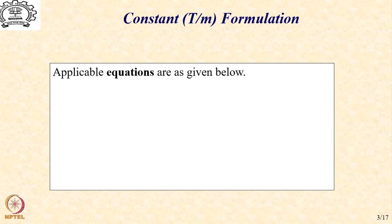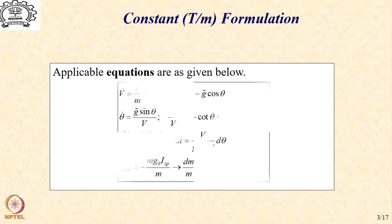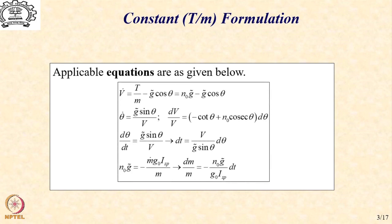Let us now look at the applicable equations. When we take the v-dot equation, we have the thrust term m-dot times g0 times Isp by m, but that is effectively the T by M term. We replace that with T by M, which is going to be a constant, represented as n0 times g-tilde, where n0 is a real number indicative of the number of g's that the propulsion is generating.